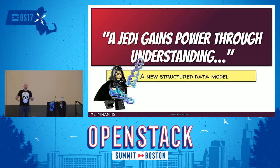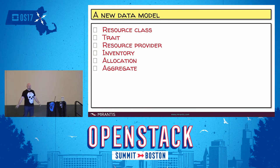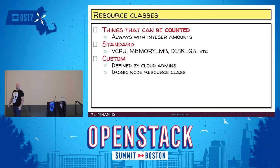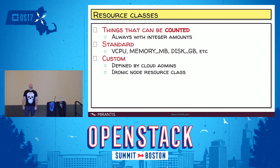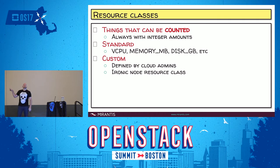Let's take a look at the new data model that the placement service provides. We have a number of major models: resource class, trait, resource provider, inventory, allocation, and aggregate. Resource classes are things that can be counted — they only have integer amounts, so you can't have half a CPU or 2.5 megabytes of RAM. There are standard resource classes listed in the Nova source tree, and you can do a GET on /resource_classes from the placement API to see which are available.